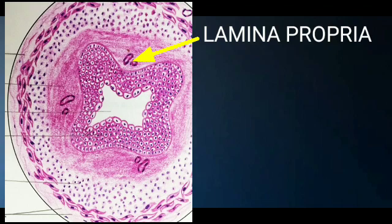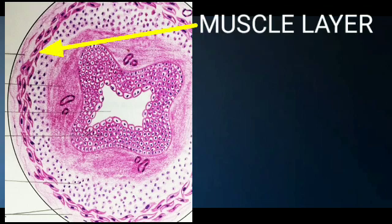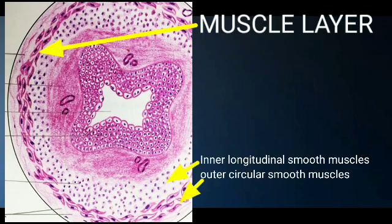The lamina propria is outer to the lining epithelium, made up of loose connective tissue in which blood vessels are embedded. The muscle layer consists of two layers: an inner longitudinal layer of smooth muscles and an outer circular layer of smooth muscles.